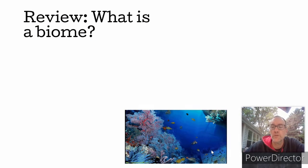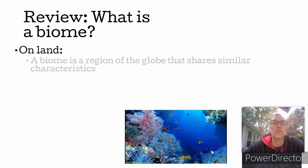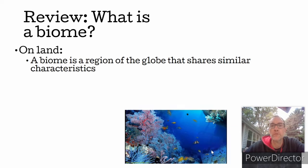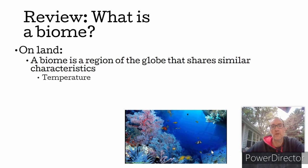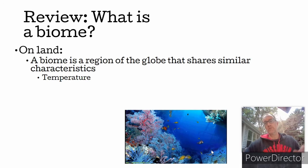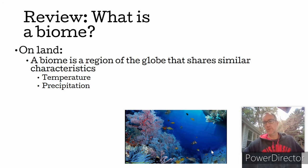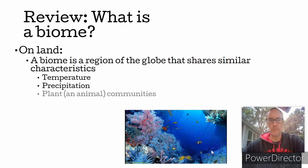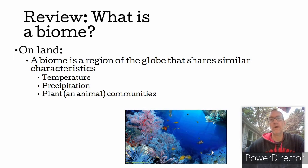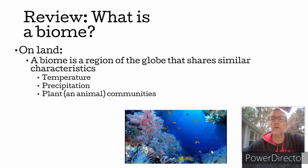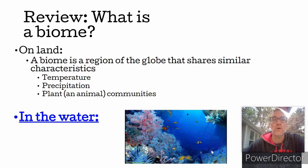Remember our last conversation, 1.2, where we talked about how a land biome is a region of the globe that shares similar characteristics. Those characteristics usually have to do with latitude, which determines temperature, but it also includes precipitation patterns and weather patterns. We can identify those biomes fairly easily by looking at vegetation and what animal communities exist there.